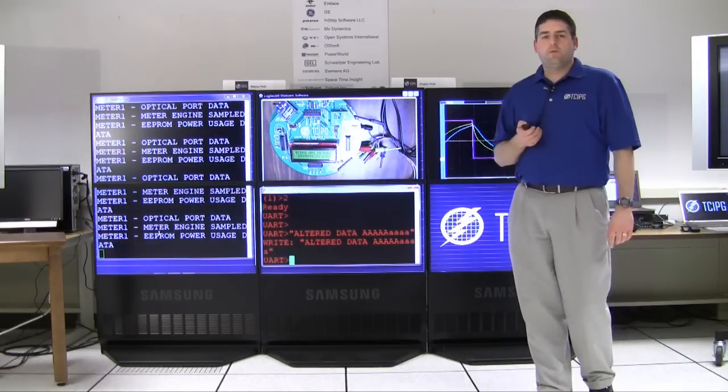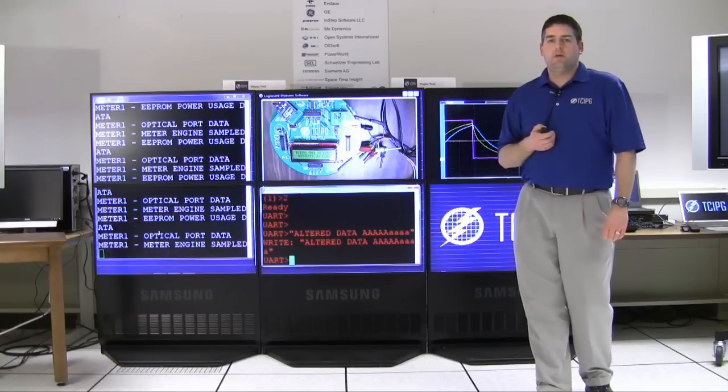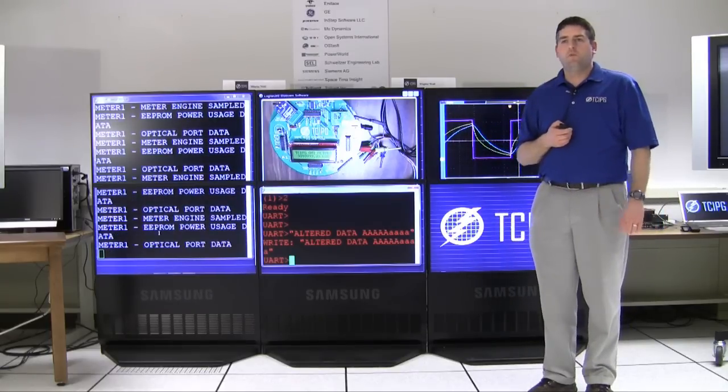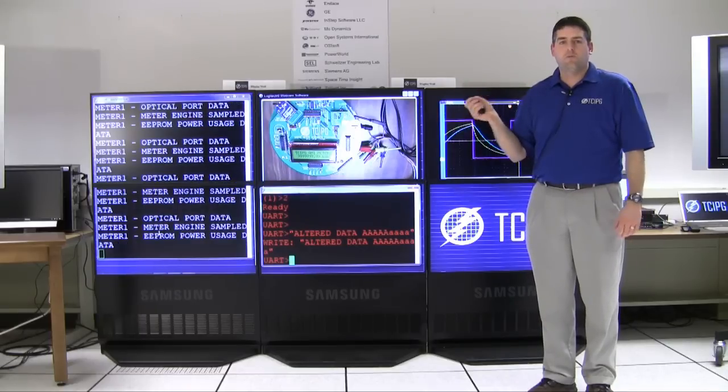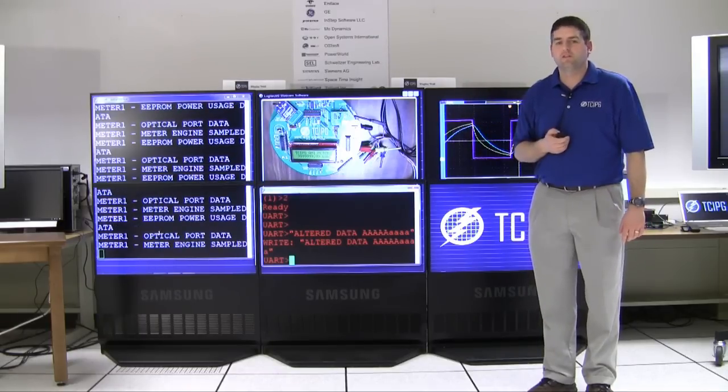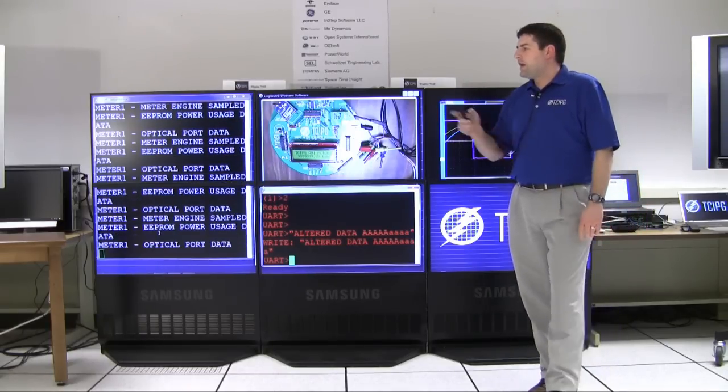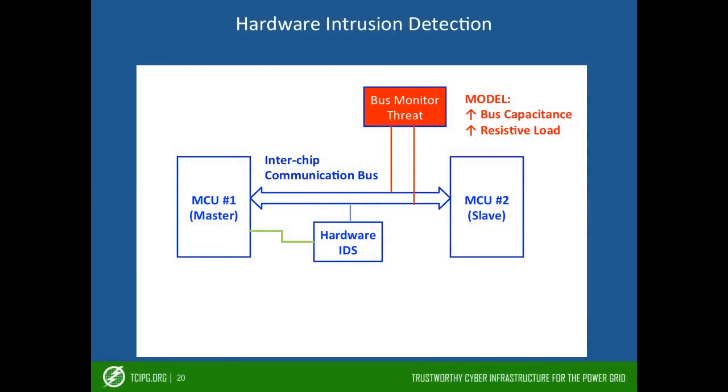One of our approaches that we're looking at is installing and researching the ways to detect hardware trojans on AMI devices. If you look at the bottom of our screen, we have a hardware IDS, sensor intrusion detection. It's attached to the bus via an analog switch and is controlled, in this case, by the master, which might be the front microprocessor.